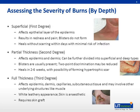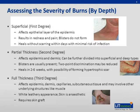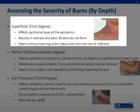Now we move on to assessing the severity of a burn. Burns can be classified by their depth as well as by their size and extent. Let's start with depth first. There are three types of burns. In a superficial or first-degree burn, only the top layer of the skin — the epidermis — is affected. A sunburn is a common cause. It usually appears red and is extremely painful. Blisters are not formed and two-point discrimination is intact. Superficial burns usually heal without scarring in a few days.